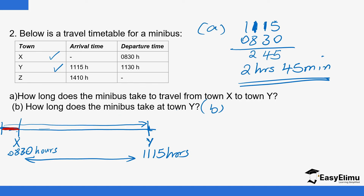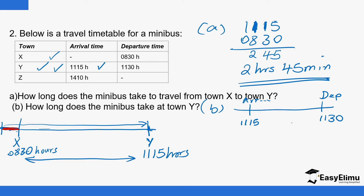Next, how long does the minibus stop at town Y? The minibus arrived at town Y at 11:15 and departed at 11:30. We are keen on arrival and departure times at this stop. Doing 11:30 minus 11:15, the difference is 15 minutes. It's that simple.